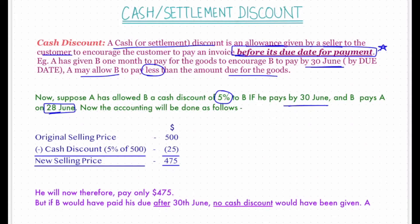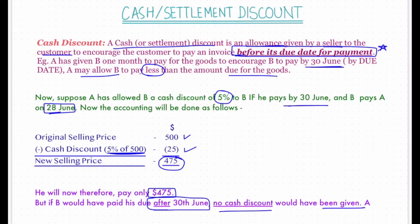The original selling price is $500. Cash discount is 5% of $500, which is $25. The new amount to be paid is therefore $475. B will now pay only $475. If B had paid after 30th June, no cash discount would have been given.